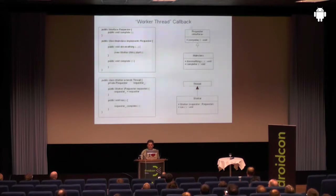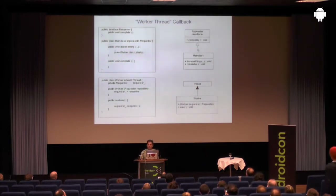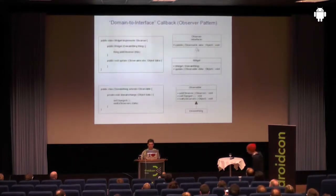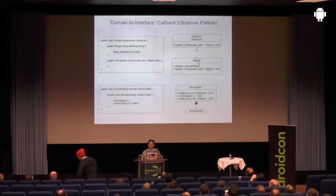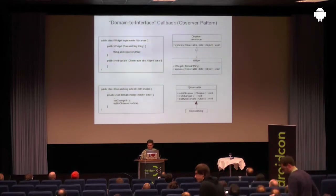I'm using UML here, and probably you're familiar — this is the UML notation for inheritance. Worker is a subclass of Thread. The unfilled triangle with a dashed line is the UML notation for an interface. So the main class — the one that's invoking the worker thread — implements the interface, and the worker thread extends Thread.